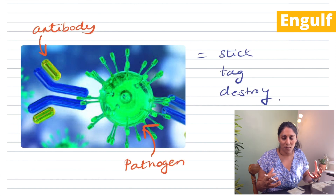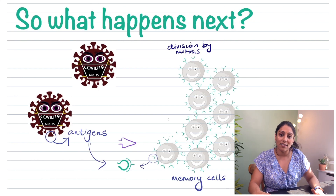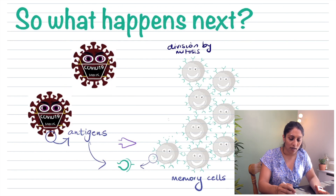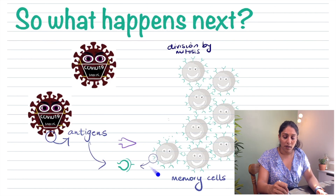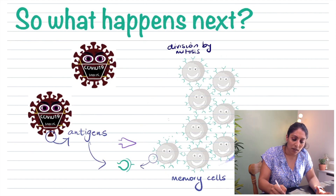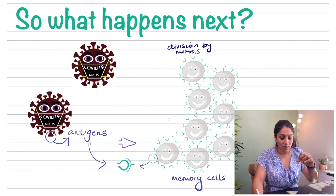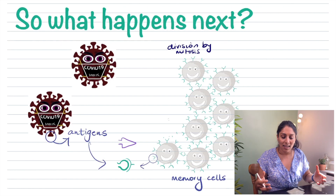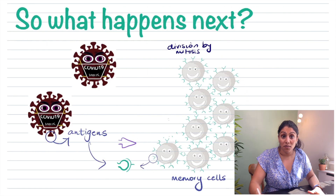After encountering a pathogen and the pathogen has gone, the white blood cells start dividing by mitosis, producing many more cells. This is because the white blood cell now has the correctly shaped antibody for that specific pathogen. If that pathogen is ever encountered again, the response will be much quicker because the body is already prepared to fight it — this links to how vaccinations work.